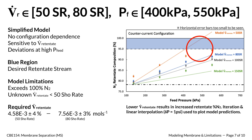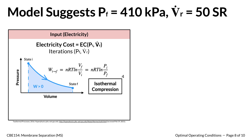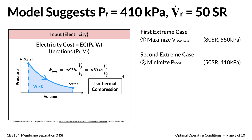Since we want at least 95% nitrogen purity in the retentate stream, the retentate molar flow rate must be low enough while still maintaining high pressure. Within this range of possible operating conditions, the model suggests a feed pressure of 410 kilopascals and a retentate flow rate of 50 SLPH would be ideal. When compressing gas, we assumed isothermal compression to find the power at which an air compressor would need to operate, with all relevant derivations found in the Appendix.